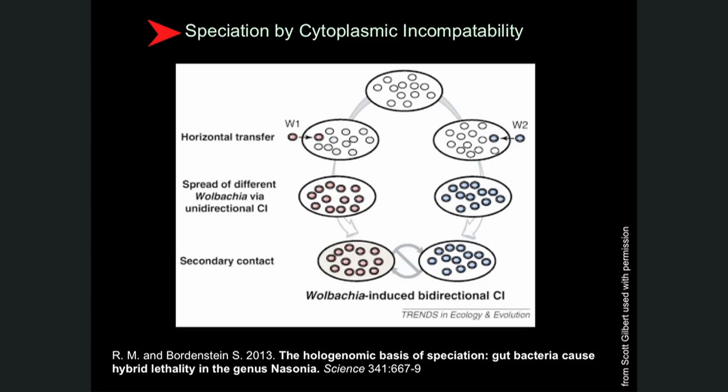Here's an example of speciation due to cytoplasmic incompatibility. Wolbachia bacteria will infect various animals and they can actually either change the sex of the animal, change the mating preferences of the animal, or change the animal so that it can only produce viable offspring with another infected animal — infected with the same strain of Wolbachia, not a different strain. So here's an example of reproductive isolation being induced by the microbiota.